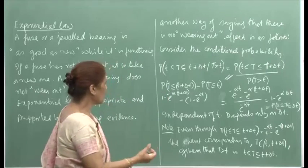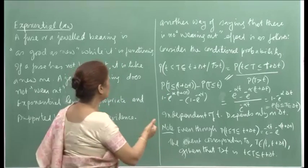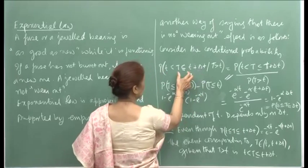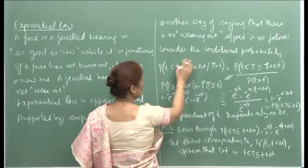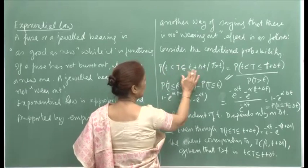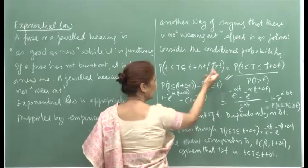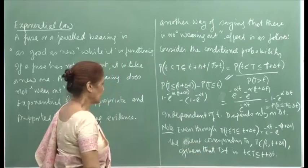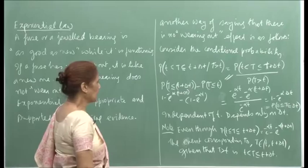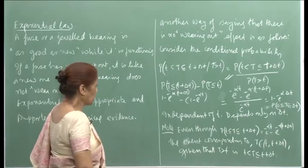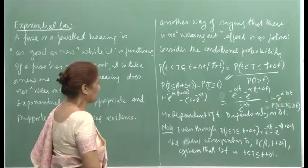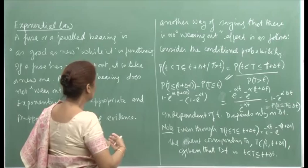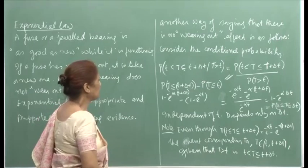The length of the interval is delta T, and this conditional probability is independent of t and depends only on delta T. Therefore, this is another way of saying it is memory-less, or that the wearing out effect is not present. It does not matter for how long the system has already been working — the probability of failing in interval T to T plus delta T depends only on delta T.